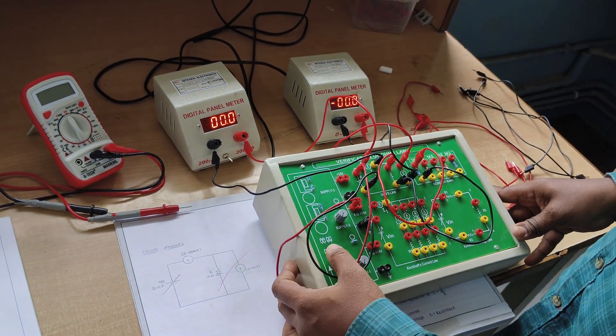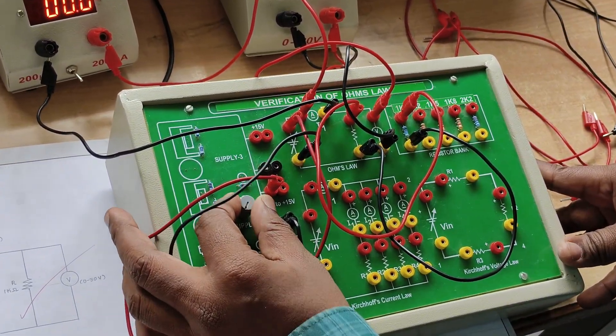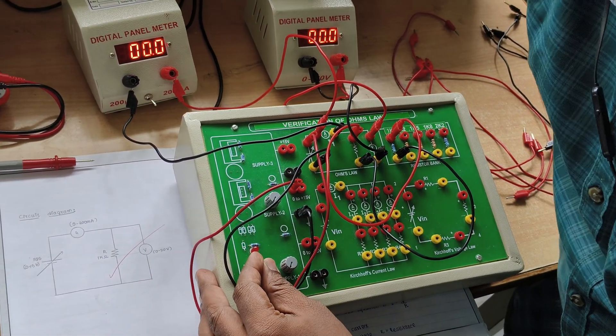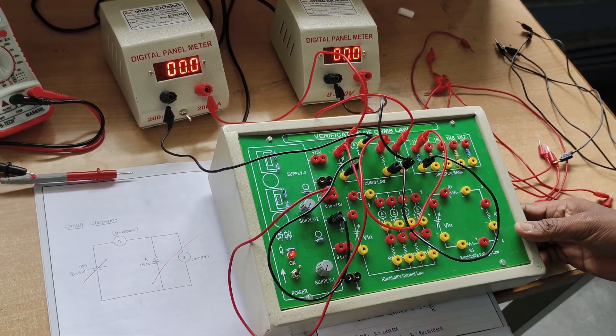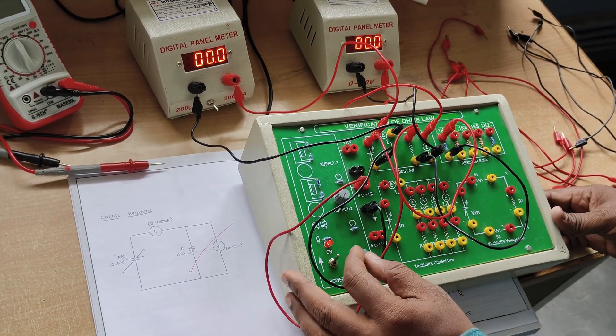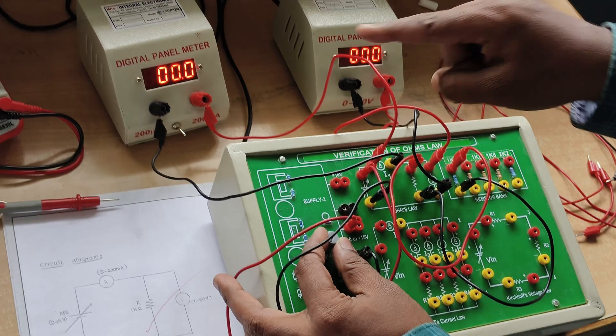After switching on the RPS, slowly vary the regulated power supply. The first value is zero, so we take the first voltage reading at zero. By applying zero voltage, we take down the readings. Practically, we got zero volts.